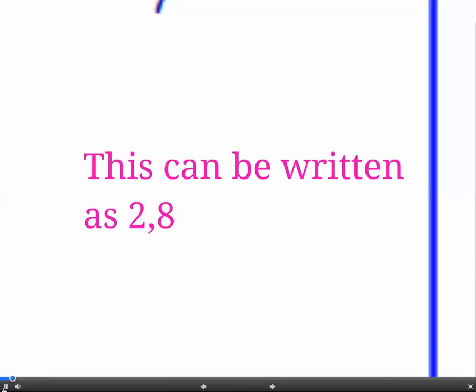So if you're doing an exam question which is asking you to draw the electronic structure of an atom, it's a good idea to write it out in numbers first, like this 2,8 or 2,8,1, whatever it is. And that will help to make sure that you get the right number of electrons into each electron shell.